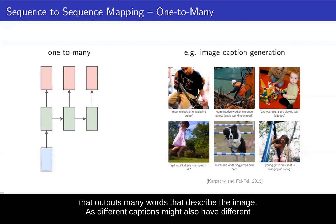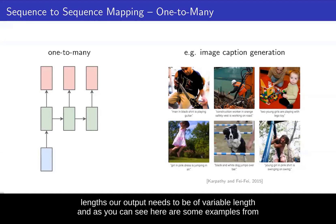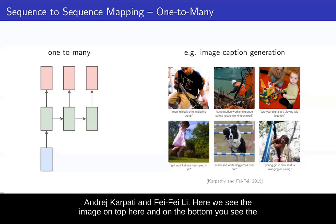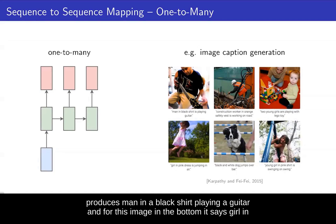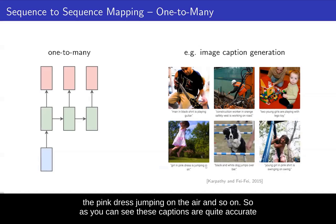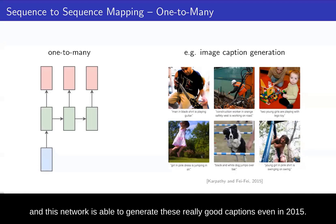As different captions might have different lengths, our output needs to be of variable length. Here are some examples from Andrej Karpathy and Fei-Fei Li. For example, in the first image the network produces 'man in a black shirt playing a guitar,' and for another image it says 'girl in the pink dress jumping in the air.' So as you can see, these captions are quite accurate, and this network is able to generate really good captions even in 2015.